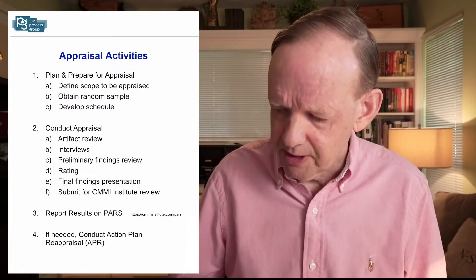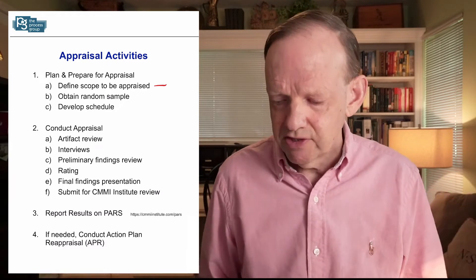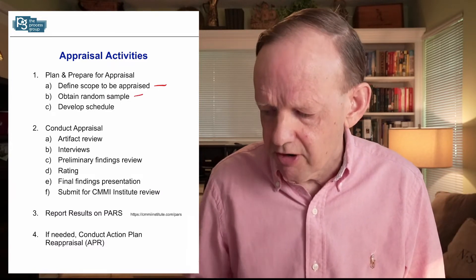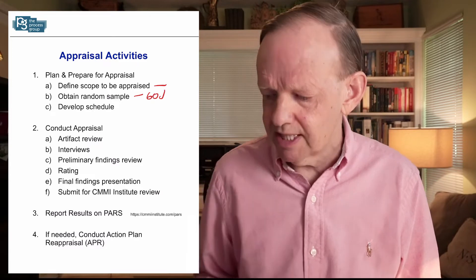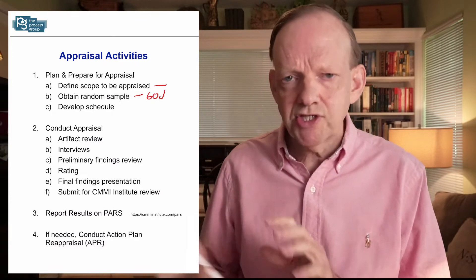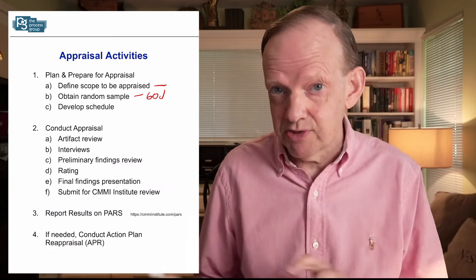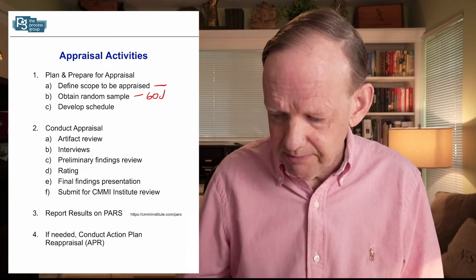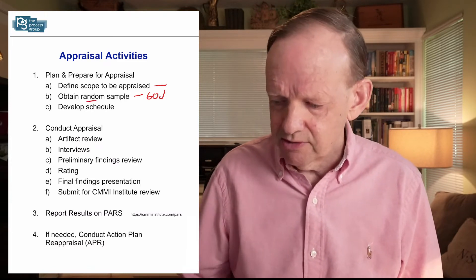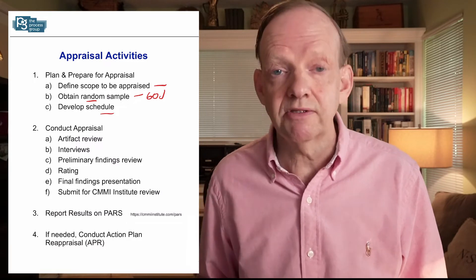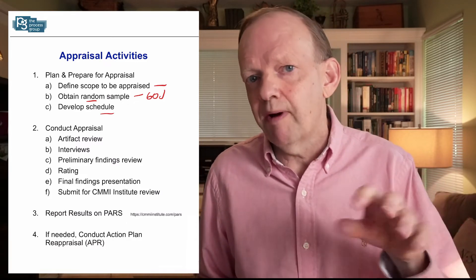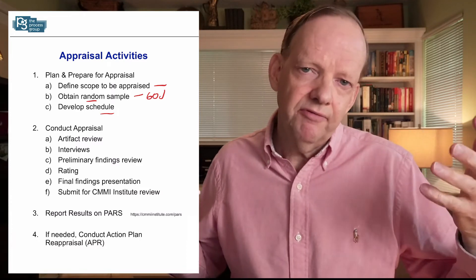The basic flow of events: we define the scope of the appraisal — maybe a particular division, project, or line of work, not the whole company. When the project list is figured out, we do the random sampling typically 60 days before the appraisal start date. We can scope and discuss things well before that, but we can't get the sampling and the orange/green squares done until 60 days before day one.